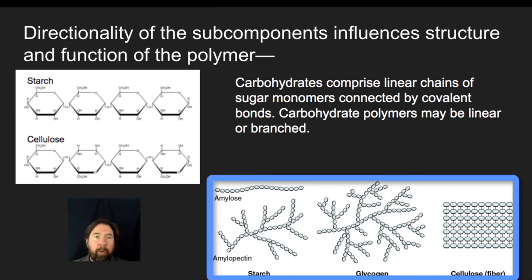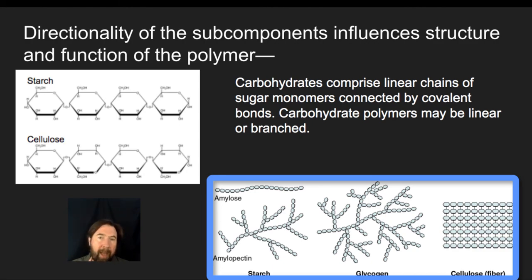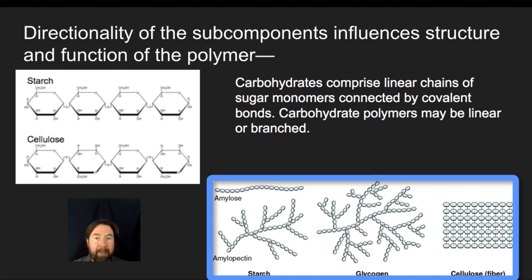Cellulose, however, has an alternating structure in how it forms its bonds, and the enzymes found inside animals do not have the ability to cleave these alternating structures. The directionality of how those bonds form ultimately plays a role in how enzymes can access and break them down. This is why you can't take a handful of grass and chew it up and get energy from it, but you can take pasta that has starch in it and gain energy from that.